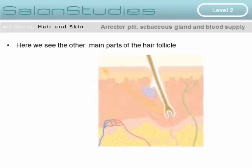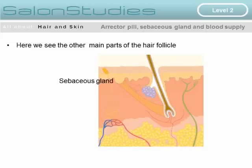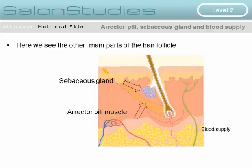Here in this diagram we see the other main parts of the hair follicle. In the upper part of the diagram we see the sebaceous gland. Below this we see the erector pili muscle, and then over to the right we see the blood supply.